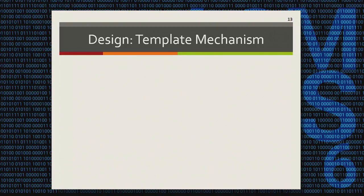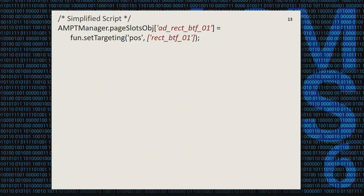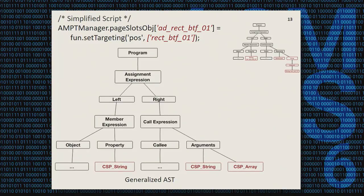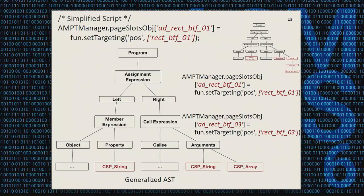Now let's look at the template mechanism. The first task is to infer the JavaScript's code structure. An abstract syntax tree (AST) is a convenient mechanism to express code in a structural way. However, the AST not only shows the code structure but also the code's data. We only want the structure, so we propose a variant called the Generalized Abstract Syntax Tree (GST). In the GST, all data nodes are generalized as a CSP string or CSP array. In this way, different scripts with the same code structure share the same GST and can be grouped together.